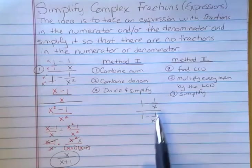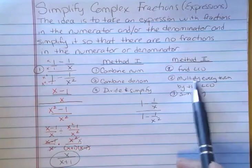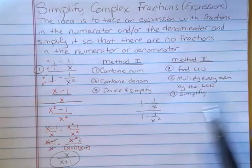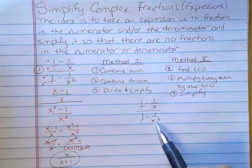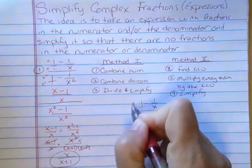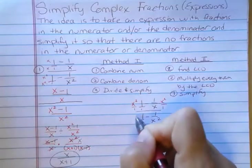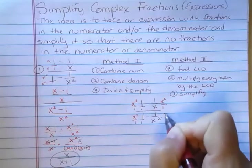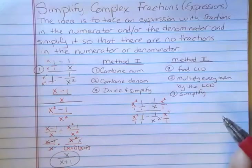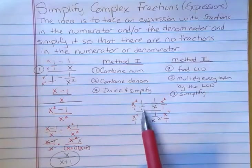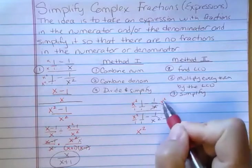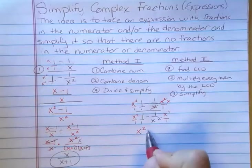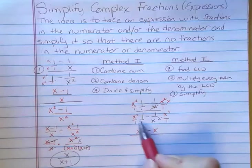Let's look at the second method for that problem. The second method says: find the LCD and multiply every term by it. This LCD is x squared, because I have two x's here, so I need to multiply everything by x squared. In the first case I'm going to have x squared. In the second one, this x will cancel one of those, leaving x — so minus x. And then I have x squared, and these x's are going to cancel, giving minus 1.